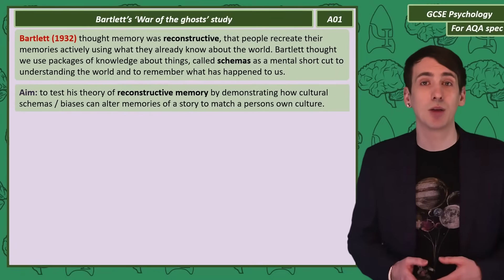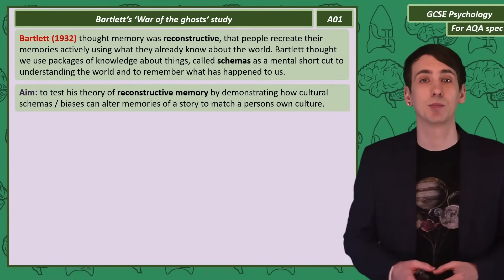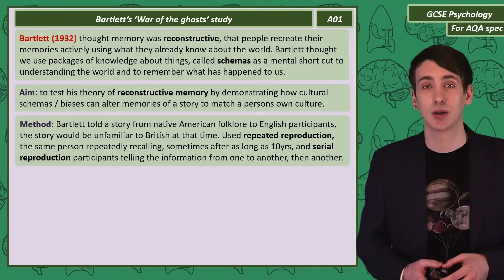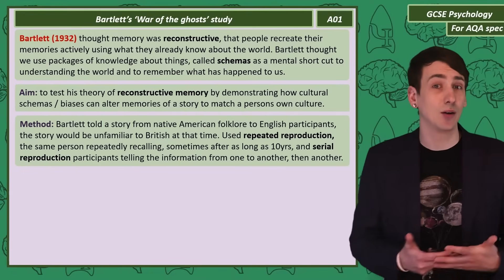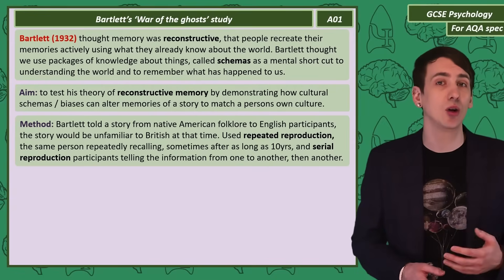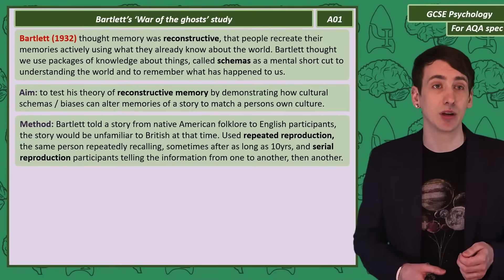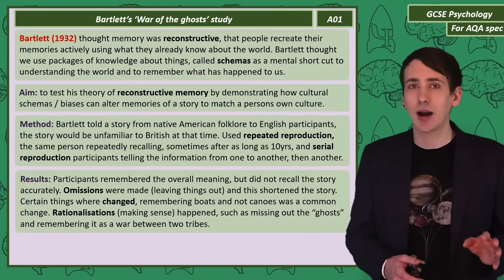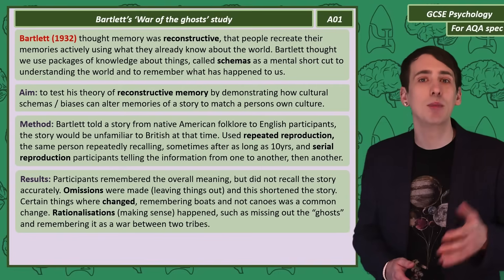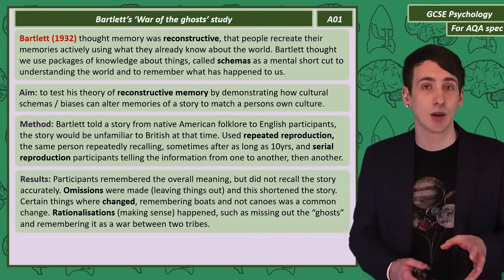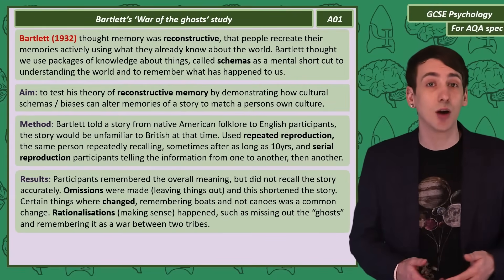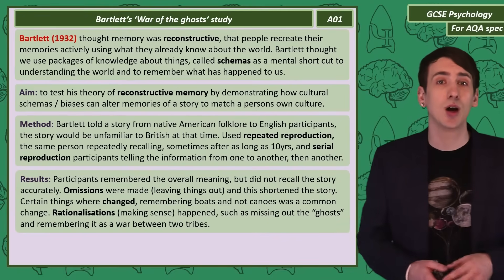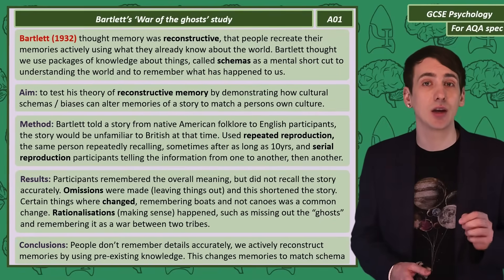Bartlett's aim was to test his theory of reconstructive memory by showing how recall is influenced by cultural schemas. His method was to tell the War of the Ghosts story — a Native American story — to English participants, so it was very unfamiliar to them. Using a process called serial recall, Bartlett asked participants to retell the story with gaps in time between 15 minutes and 10 years. His results showed that participants would remember the overall meaning of the story but not accurately. Often participants would leave out details — omissions — that would shorten the story. They also changed some parts: a common change was remembering boats, not canoes. Participants would also make rationalizations, changing parts of the story so it would make more sense to them. Bartlett concluded that memory is actively reconstructed and memories are changed to match schemas.